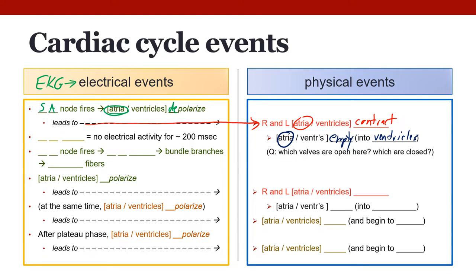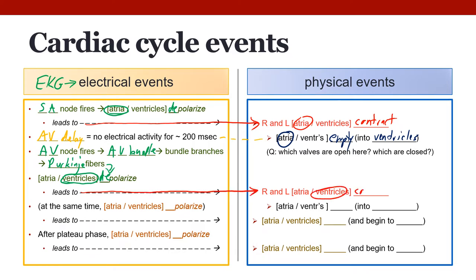Quick quiz: which valves have to be open for blood to move from the atria into the ventricles? Which ones can still be closed at that point? While the atria are emptying, we have the AV delay — no electrical activity for up to about 200 milliseconds — and that allows time for the atria to empty into the ventricles. At the end of that delay, the AV node fires and sends a signal to the AV bundle, then the bundle branches, and finally the Purkinje fibers, which pass the signal on to the cardiac myocytes of the ventricles, which are going to depolarize. Depolarization of a muscle always leads it to contract, so the ventricles are now going to contract.